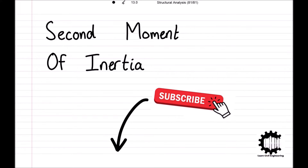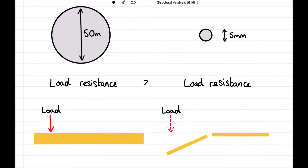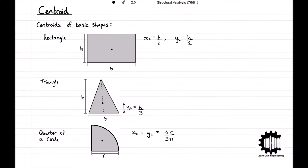In previous videos, we have learned about the significance of the area and location of the centroid for the section of an element and the overall behaviour of a structure. For example, a beam with a greater cross-sectional area will typically be able to take more load before deforming than a beam with a smaller area, and knowing the location of the centroid is important for simplifying calculations.